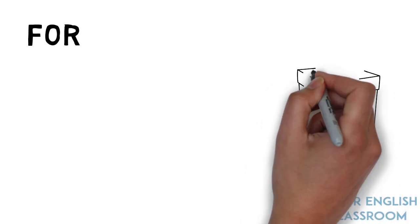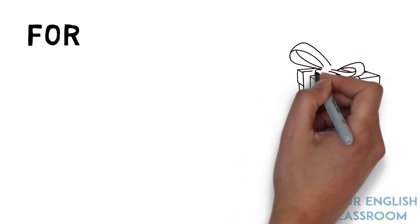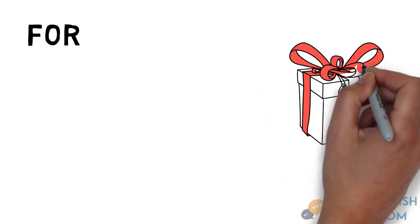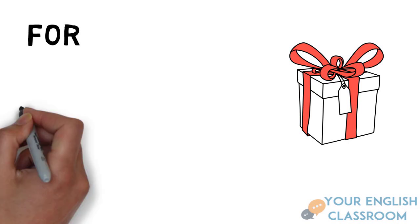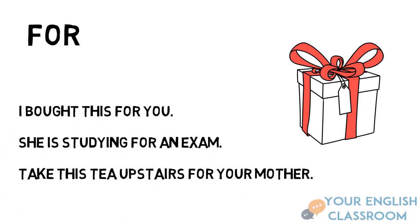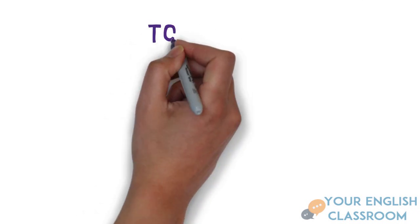Now let's take a look at 'for'. 'For' actually means a benefit — it's benefiting something or someone, or there's a purpose and a reason behind it. For example: 'I bought this for you' — someone bought this for you, there was a purpose behind it. 'She's studying for an exam' — there's a purpose and a reason why she's studying. 'Take this tea upstairs for your mother' — there's a reason why you're taking it, good manners, there's a purpose behind it.